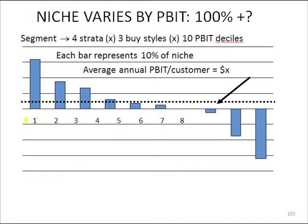What happens is we'll look at the top of the report and we'll see a couple of customers that are making enormous amounts of profit. We'll look at the bottom and we'll see some other big customers — because you can only have big losses if you're a big customer — who need to be converted.